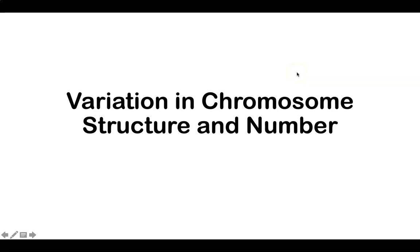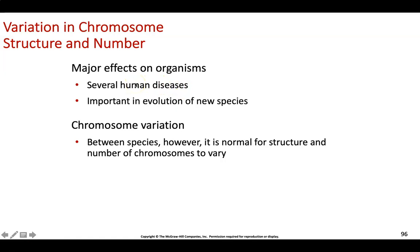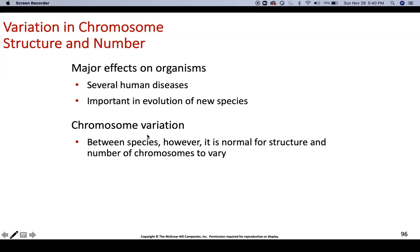Now let's discuss chromosome structure and number variation. Changing chromosome structure can have a big effect on an organism and cause many human diseases, although it has sometimes been useful during evolution into new species. Once an organism is set, we don't want changes to chromosome number or structure. Between species, different chromosome numbers and shapes are common — humans have 46, but other organisms do not.